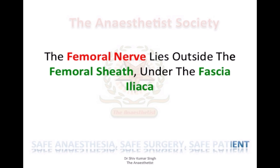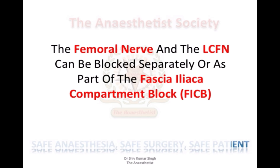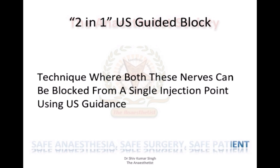These nerves can be blocked using a fascia iliaca block with large volumes, and that's what the fascia iliaca block is. What I'm going to describe here is a nerve block similar to the fascia iliaca block, but where we use much lower volumes. Let's see how this nerve block is done using ultrasound technique.